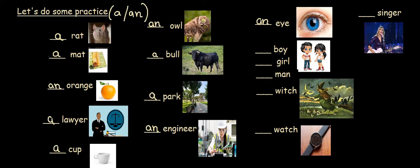So, moving on. Boy starts with the consonant b. So, therefore, it's a boy. Girl starts with the consonant g. Therefore, it's a girl. Man starts with the consonant m. Therefore, it's a man.